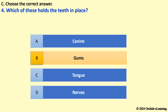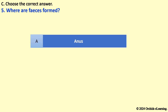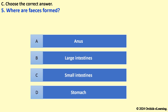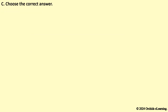Where are feces formed? The answer is B — Large intestines. Where does digestion begin? The answer is A — Mouth.